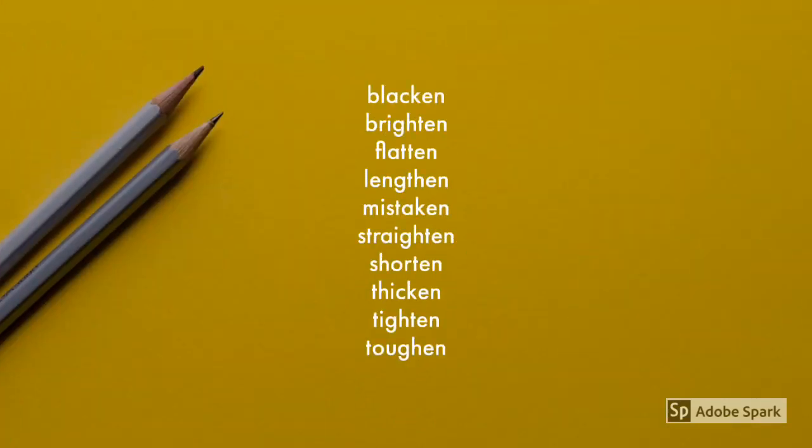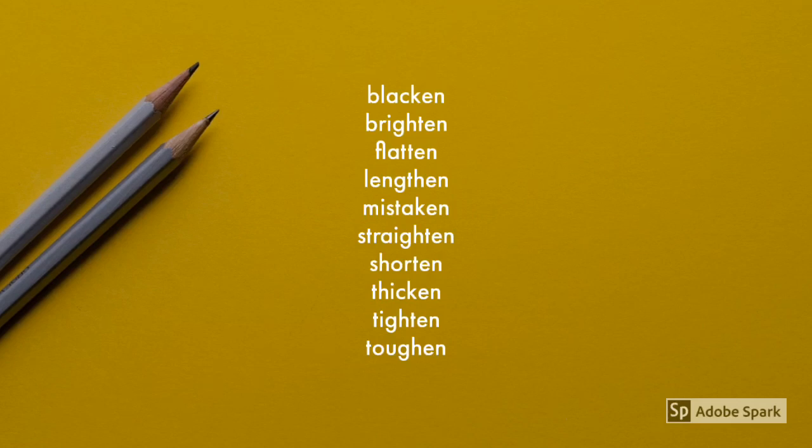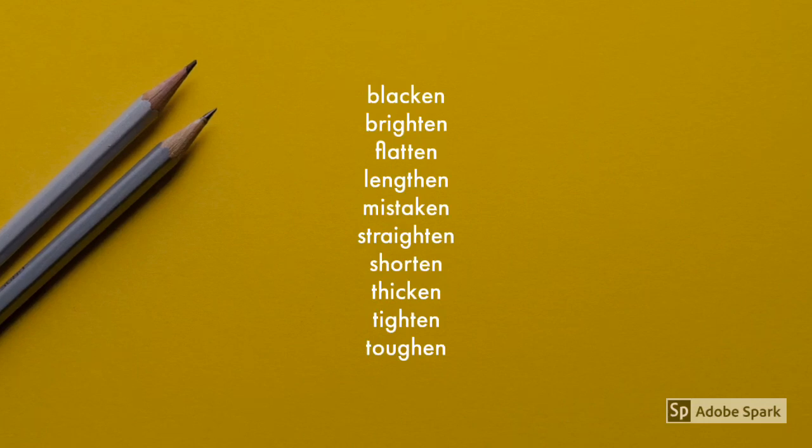There you go Blossoms. Those were the spellings for today. Now I want you to write some super sentences using each of those words. For example, blacken: When I draw the curtains I blacken the room. Now you have a go. Make sure you practice the spellings and your handwriting every day. I will see you again on Friday for the spelling test. So take care and see you soon.